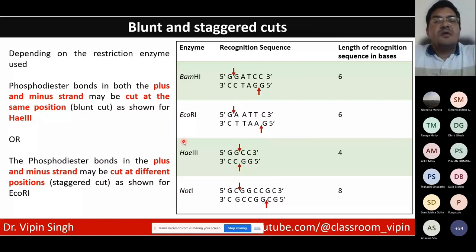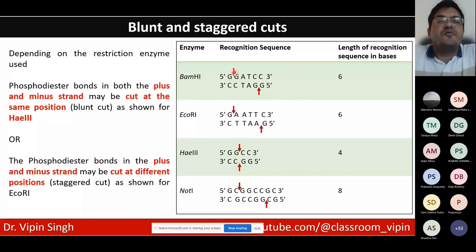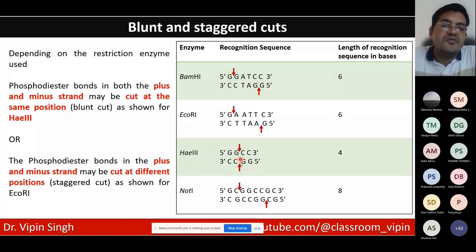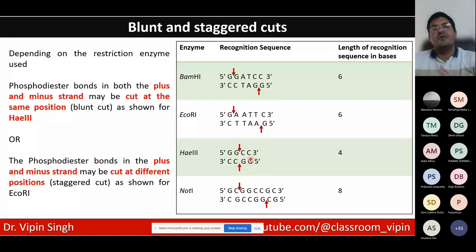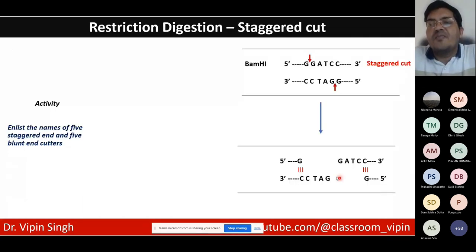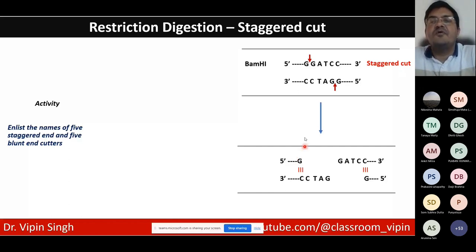Depending on the restriction enzyme, there are two types of cuts. In a staggered cut, the top and bottom strands are cut at different positions, creating overhanging unpaired nucleotides at the ends of the DNA. In a blunt cut, both strands are cut at the same position, leaving no overhangs. Blunt-end ligation is more difficult because there is no natural affinity between the fragments to come together.